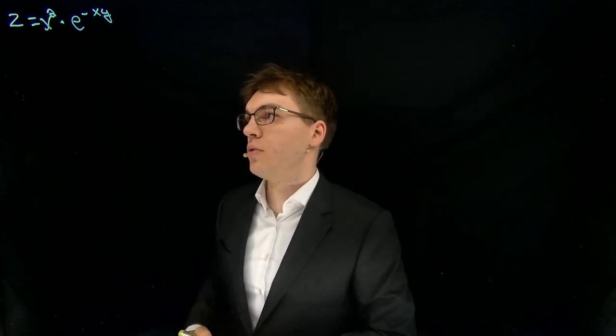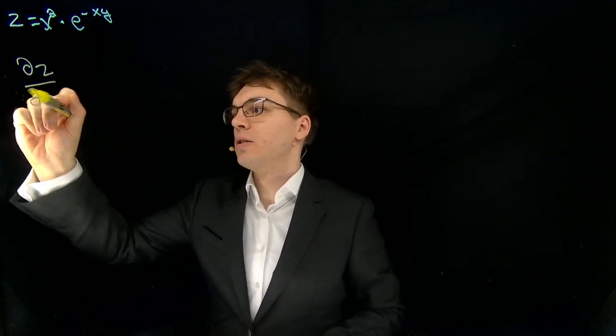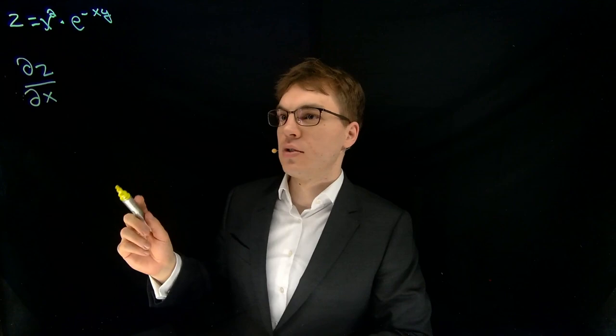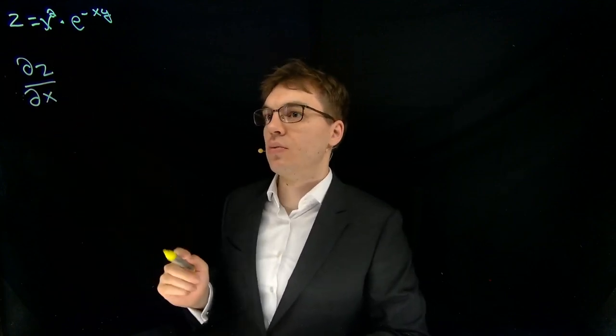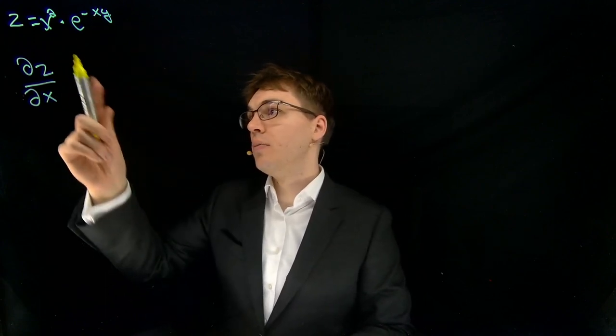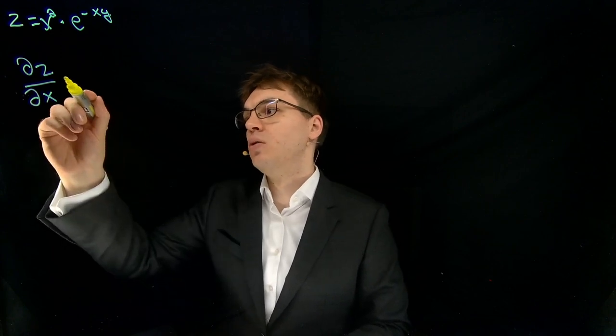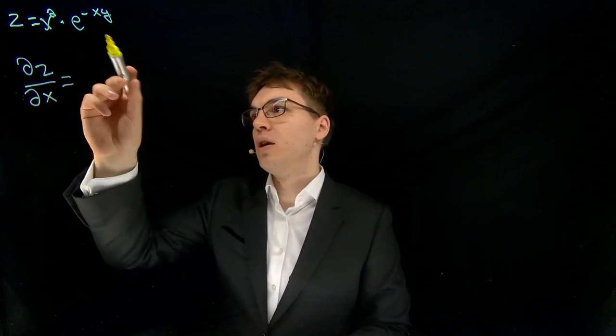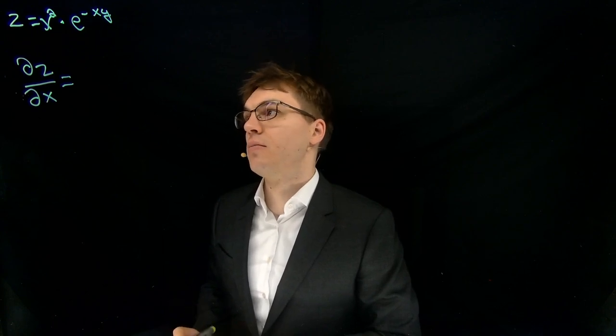So let's do this. Let's compute the partial derivative of z with respect to x first. So x would be the parameter that we are adjusting and this would be our loss function. So first we can see that we have a product here. So we need to apply the product rule. And for this we need to compute the individual derivatives, partial derivatives of the left and the right part.